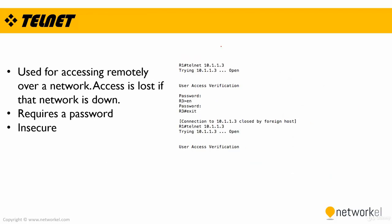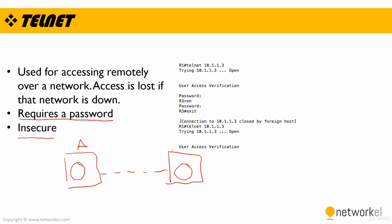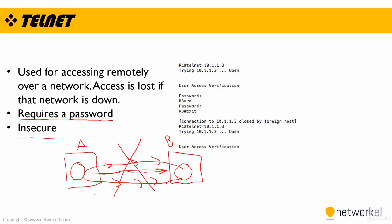The second method to access a Cisco device is using telnet. Telnet is used for accessing remotely over a network, and access is lost if that network is down. Please keep in mind that telnet is an insecure method to reach the device remotely, because the session is not encrypted. And please keep in mind that if you want to configure telnet on your device, you should set a password too. For example, if you are at location A of the corporate and the device you want to reach is at location B, there should be a network between these devices. If the network is down, you cannot reach the remote device using telnet.